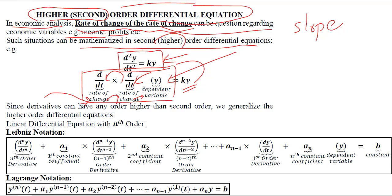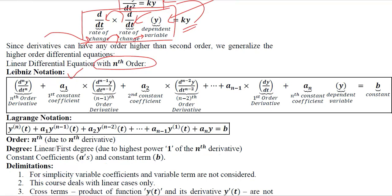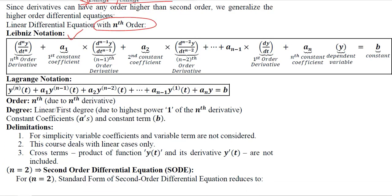We can generalize this to any order — that is, nth order instead of just second order. In Leibniz notation, we can write a higher order differential equation where the first term is the derivative of the highest order, in this case nth order. The second term, appearing after a plus sign, is one less than the highest order — that is, the (n−1)th order derivative. For example, if the highest is 3rd order, the next would be 2nd order. With each term there is a coefficient: a1 is the first coefficient, a2 the second, and so on.